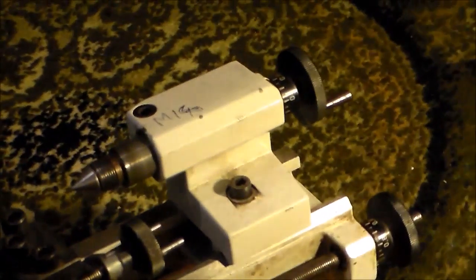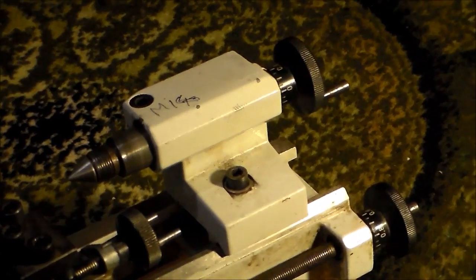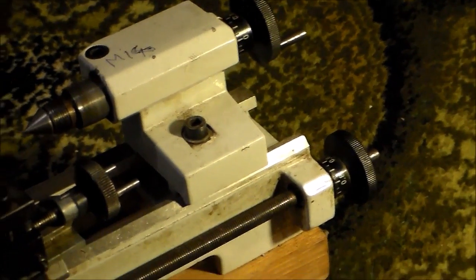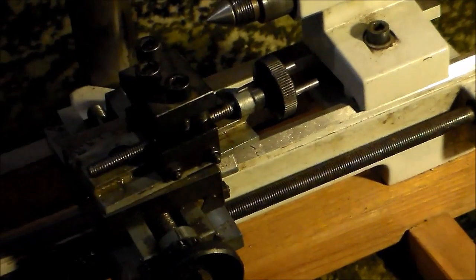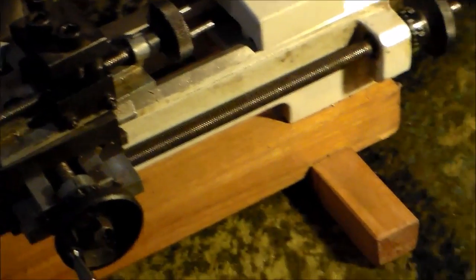Because that allows you to attach this chuck onto the cross slide, if you want to hold things in there. The alternative, of course, is a small machine vise.